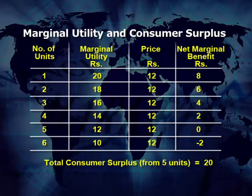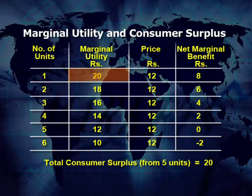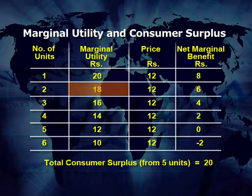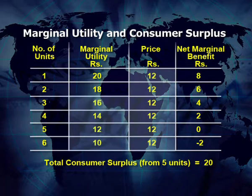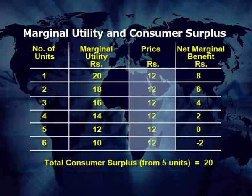Let us understand this with the help of a table. It is shown that by consuming the first unit of the commodity, the consumer gets a marginal utility of 20, meaning it is worth rupees 20 to him. From the second unit, he derives 18 marginal utility, meaning he is ready to pay rupees 18. Subsequently, he is getting marginal utility of 16, 14, 12, then 10. Actually, the consumer is not paying equal to the marginal utility because the market price remains the same from the first good through the sixth good.